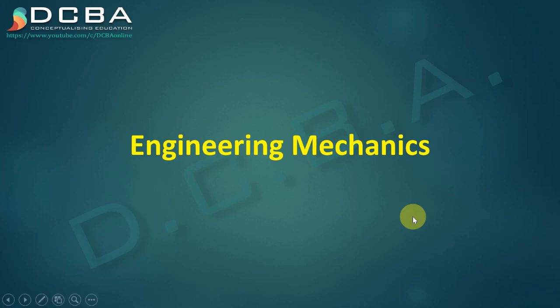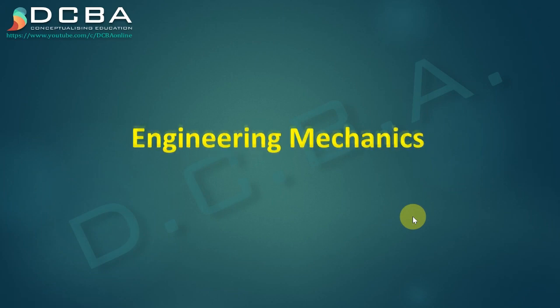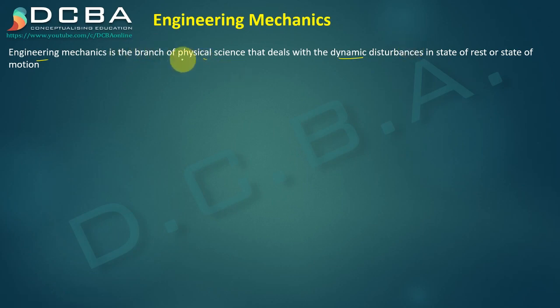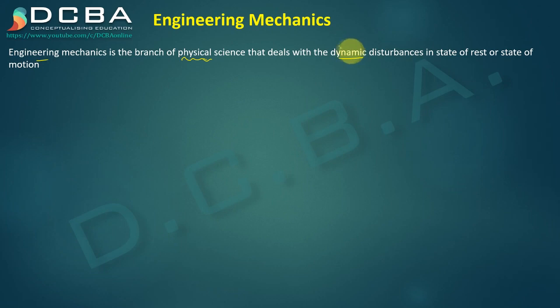This is the first lecture of engineering mechanics. Engineering mechanics is the branch of physical science that deals with dynamic disturbances in state of rest or state of motion. There are two key terms here: physical science, meaning something we can interact with, see, or touch, and dynamic disturbances.